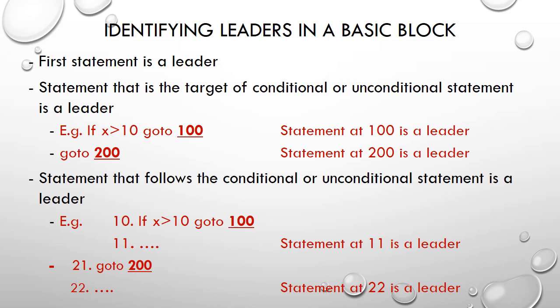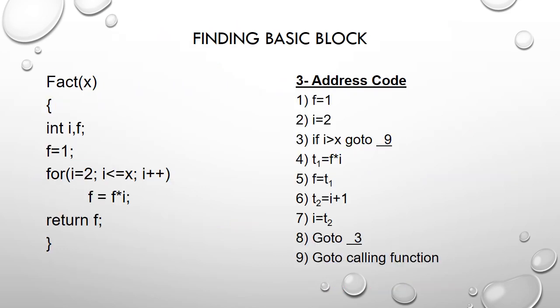Consider a program for finding the factorial of a given number. The code uses two variables i and f. The value of f is initialized to 1, then there is a for loop running from 2 to x, multiplying each value of i with f. Once the loop ends, it returns f. The first three-address code statement is 'f = 1'.